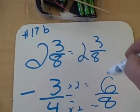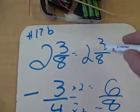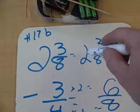Bigger bottom, better borrow. 3 minus 6 is negative 3. So we're going to borrow.